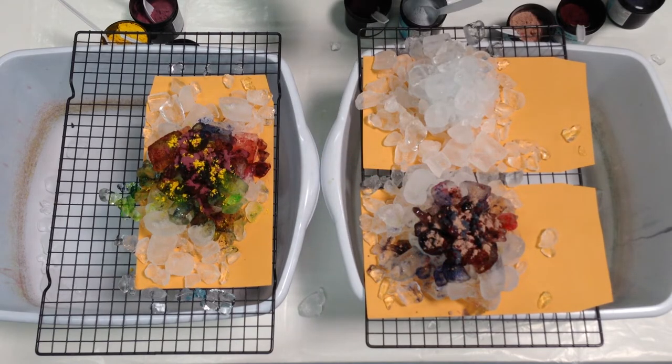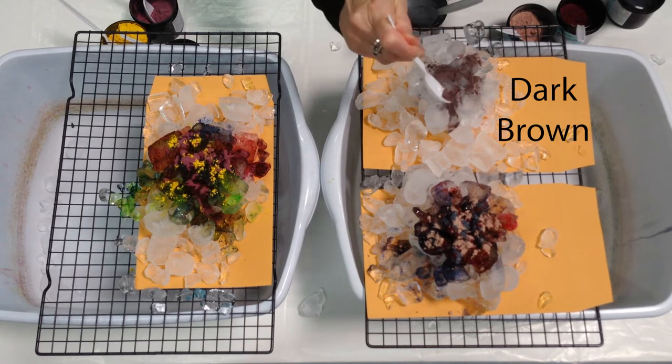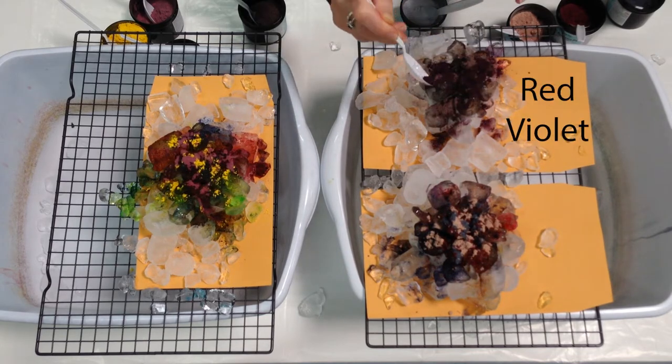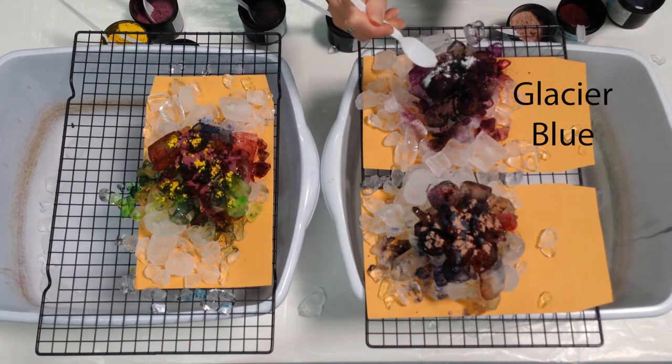The third roll gets Dark Brown, Red Violet, and Glacier Blue.